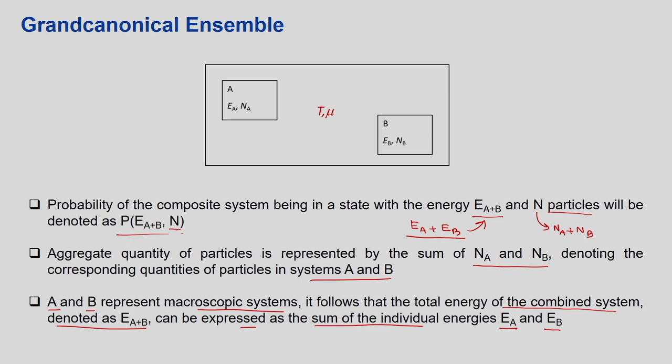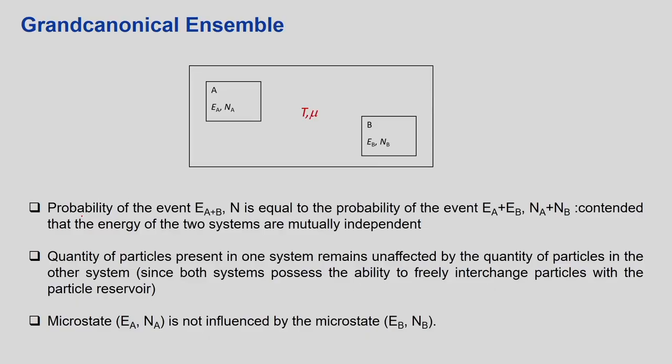We are trying to find out the probability of locating a composite system with energy E_{A+B} having number of molecules N_A + N_B, using exactly the same analogy as for the canonical ensemble. The energy of the two systems are mutually independent. Since both systems can exchange energy as well as number of molecules with the surroundings, their energies can also be mutually independent of each other.